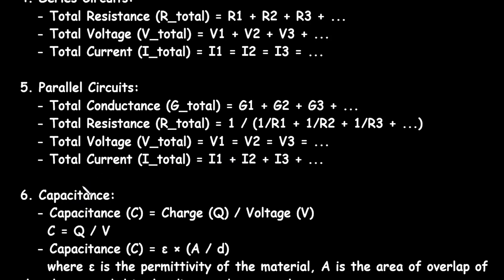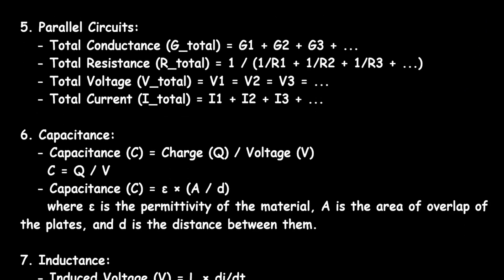Next is capacitance. Capacitance is represented by capital C, and it is equal to charge Q upon voltage V. Or simply, C is equal to Q by V. Where C is the capacitance, Q is the charge, and V is the voltage.